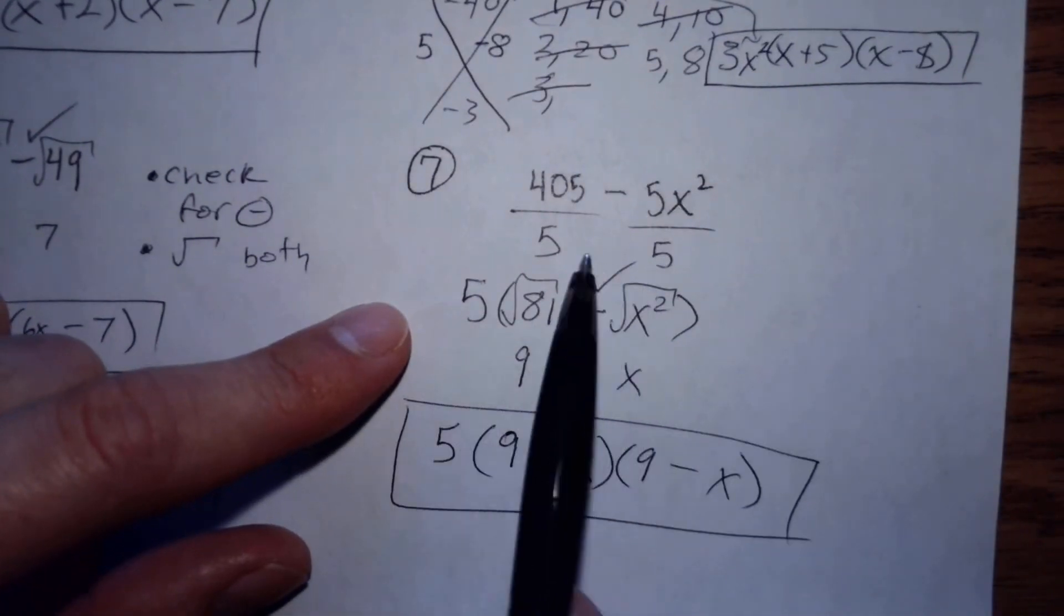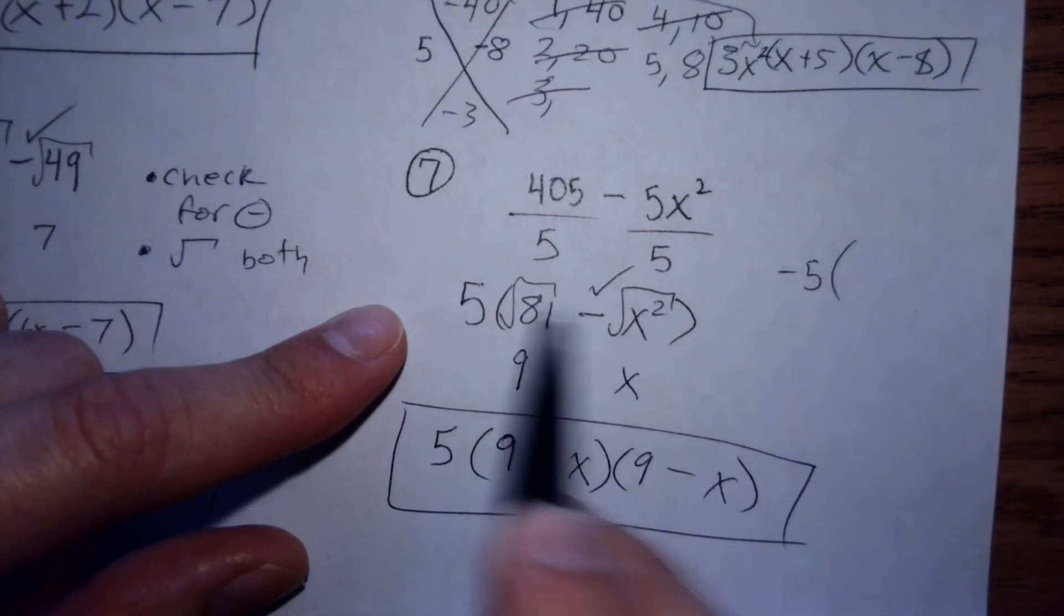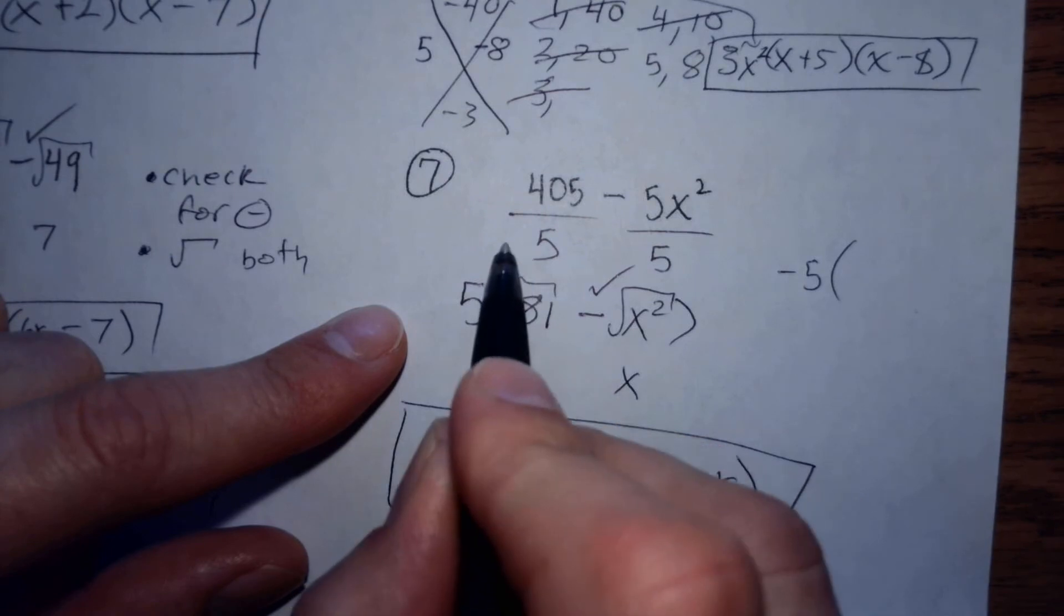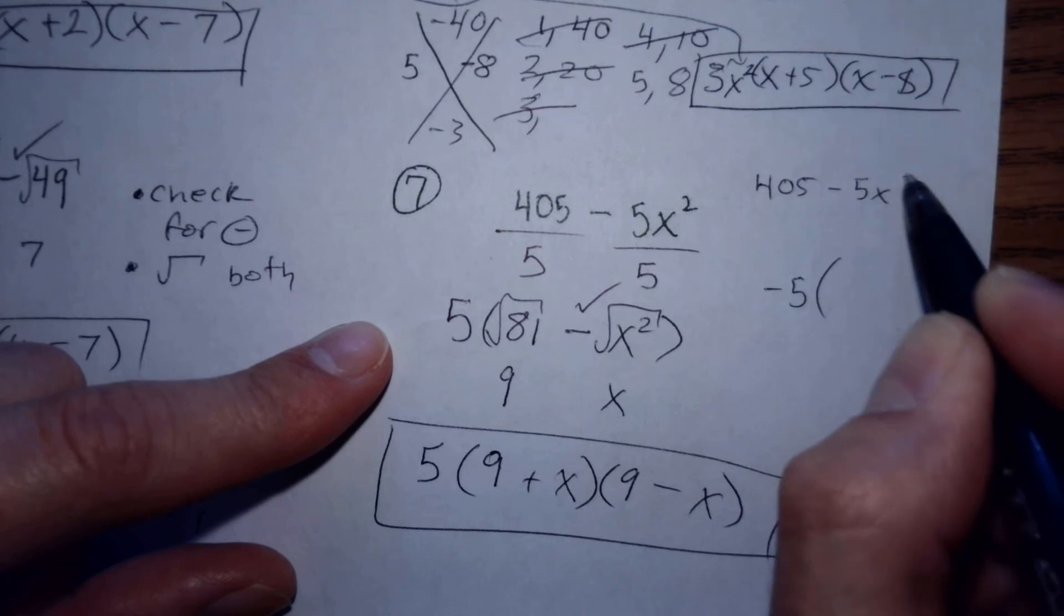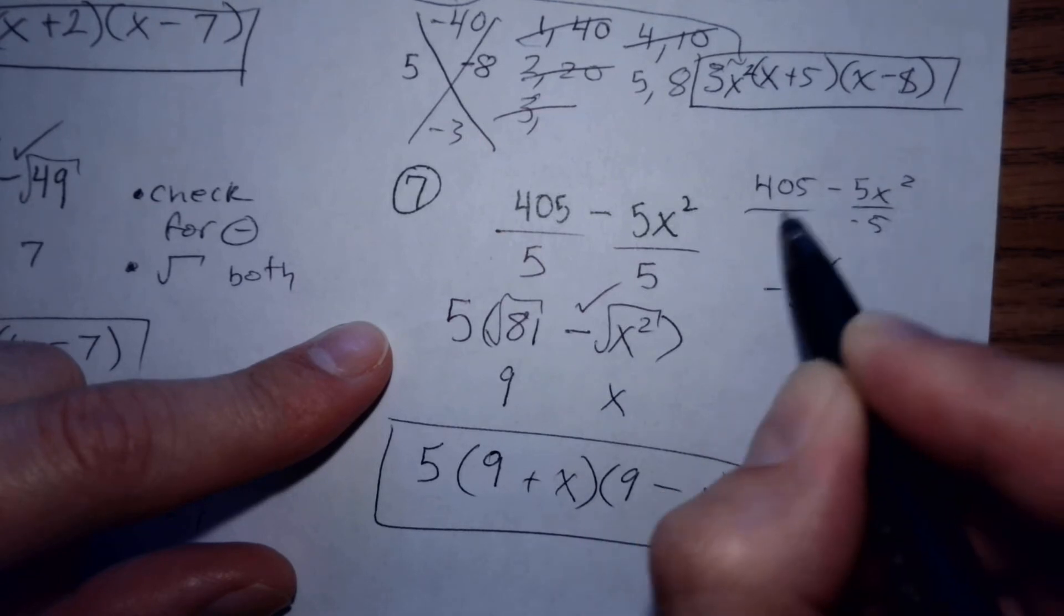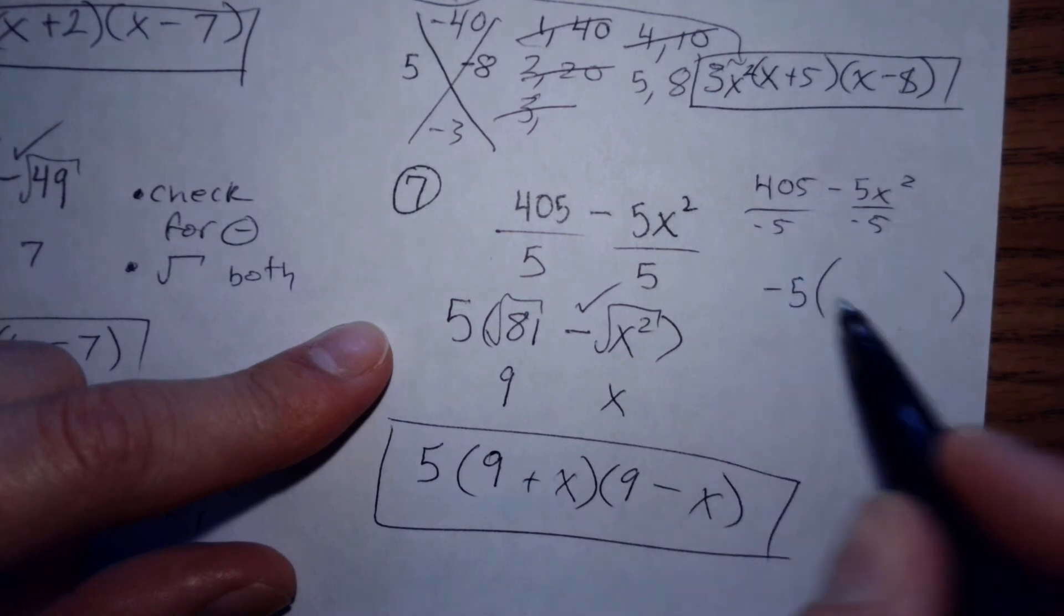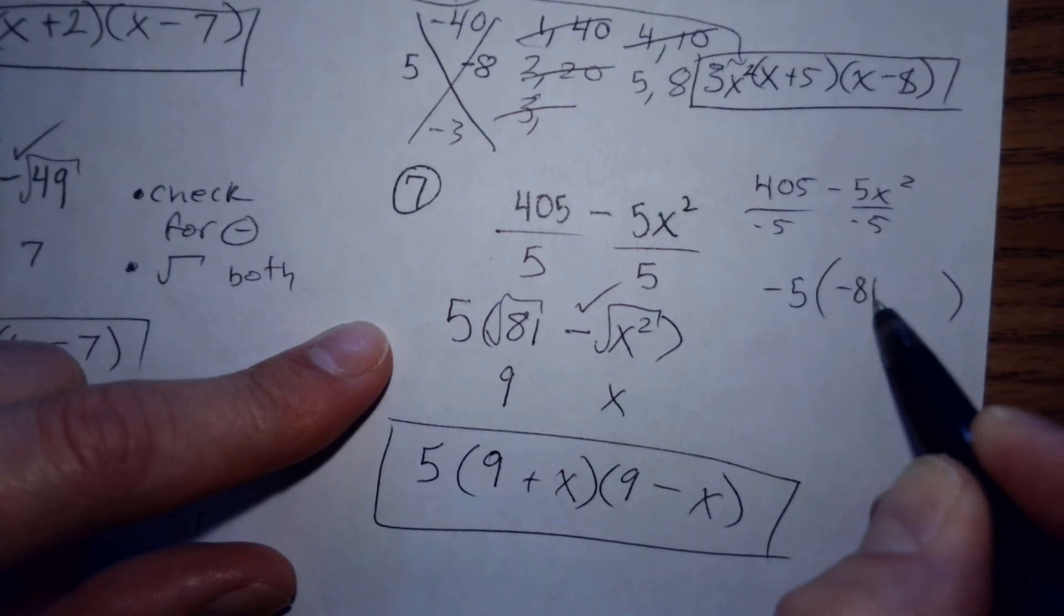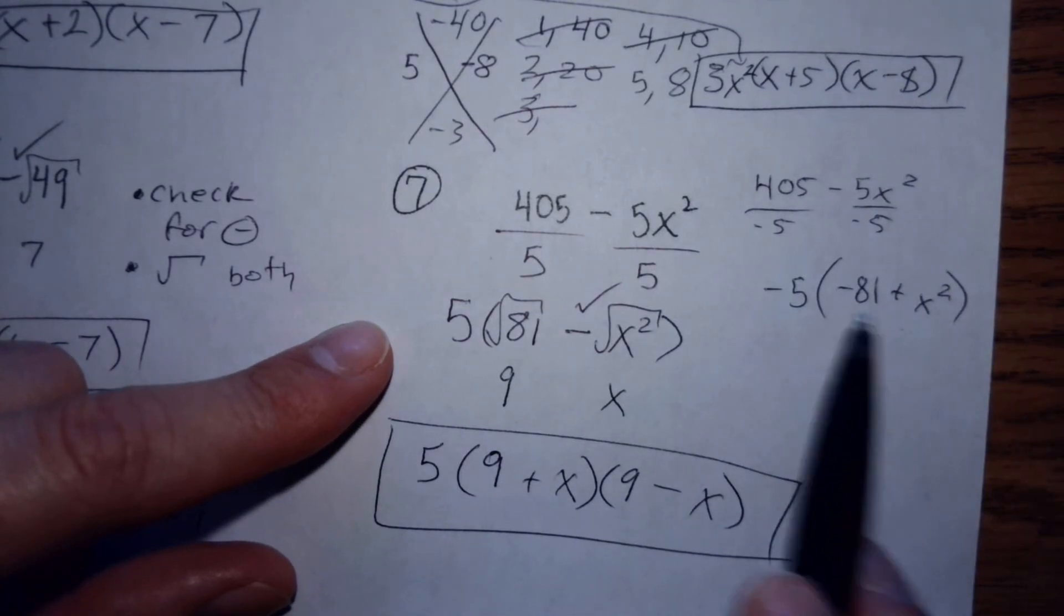The other way that you could have done it is by dividing by a negative five. If you divided by negative five, let's rewrite it: 405 minus 5x squared. If you're dividing by negative five, that gives you negative 81 and a positive x squared, but then you can switch these around so you'd have negative five, x squared positive minus 81.